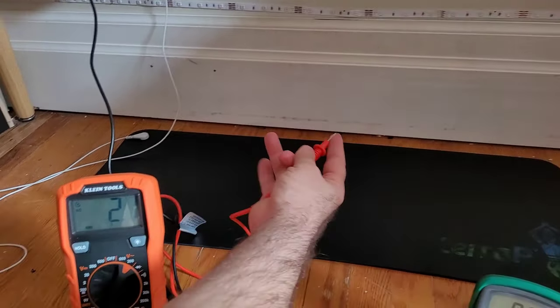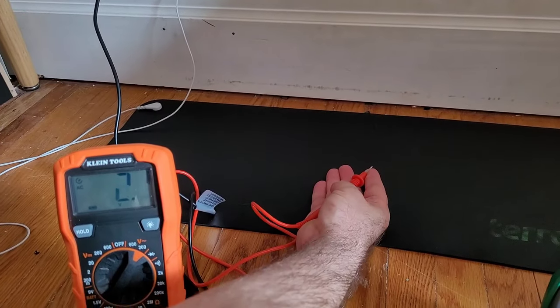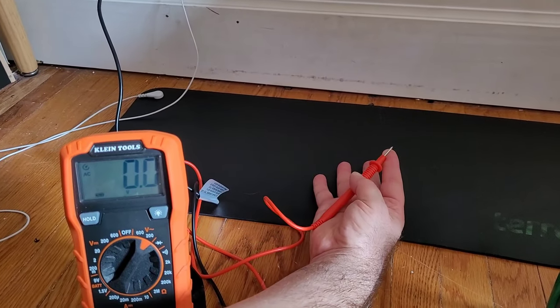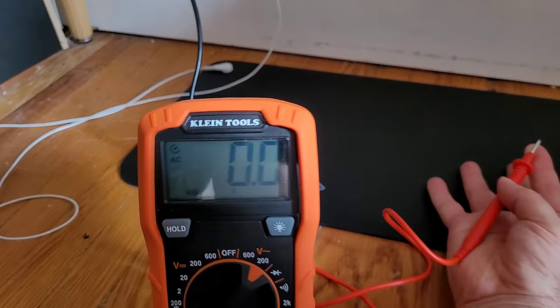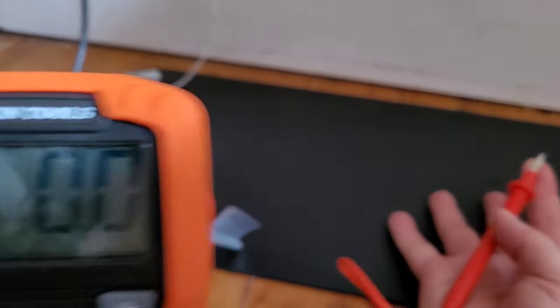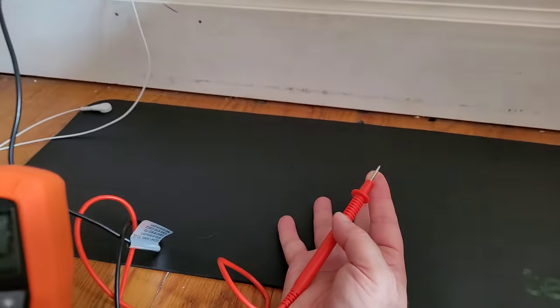Now watch this. As soon as I touch my hand on the grounding mat, my voltage, it's still connected to me, to my finger, but my voltage is zero. It has reduced my voltage to zero. That's how you know it works.